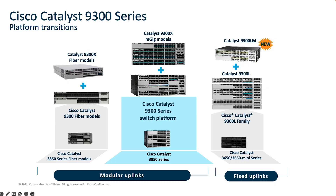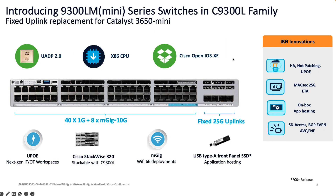Before looking at the platform details, let us have a quick look at the platform transition model. This is the Catalyst 9300 platform transition overview, wherein the Catalyst 3850 fiber models transition to the 9300 fiber as well as 9300X fiber models. The 3850 copper variants transition to the 9300M-Gig and 9300X-M-Gig variants. When we talk about the fixed uplink variants, the 3650 transitions to the 9300L fixed uplink variants, and the 3650 mini series will transition to the newer 9300 LM series switches.